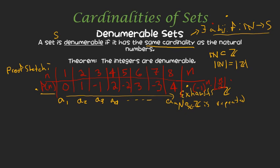Since we can list out all the integers exhaustively without repeating, we can conclude that the natural numbers have the same cardinality as the integers. That's the big takeaway — those two sets have the same size. All right, let's take a look at another set: the positive rationals, and let's see if those also have the same size as the natural numbers.